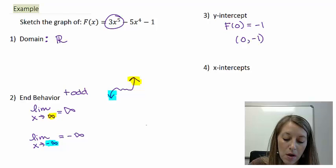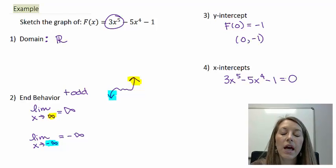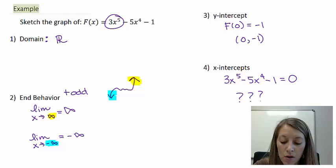Our x-intercepts, we do that by setting my original function equal to 0. And this is one where we actually might not be able to solve. So there will be times where something is just not solvable using the information that you know. And at this time, there's no way to solve this using any of the factoring or quadratic formulas or synthetic divisions or anything like that.